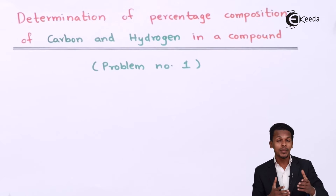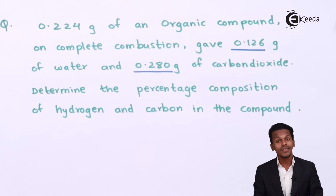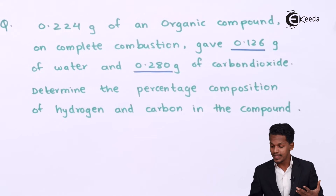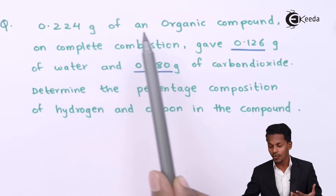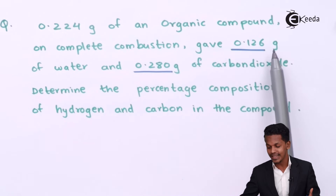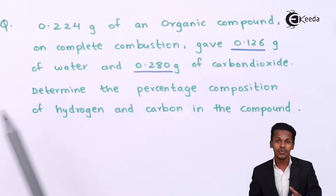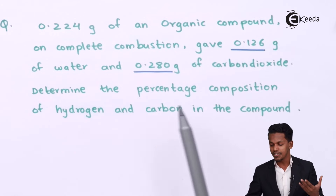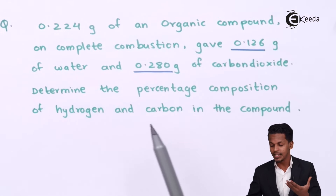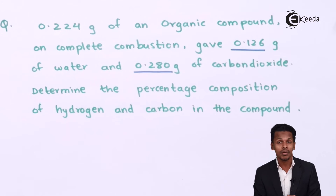In problem number one, we have to determine the percentage of carbon and hydrogen. The problem is as follows: 0.224 gram of an organic compound on complete combustion gives 0.126 gram of water and 0.280 gram of carbon dioxide. On that basis we have to determine the percentage of hydrogen as well as the percentage of carbon in the organic compound. Now let us find the solution.